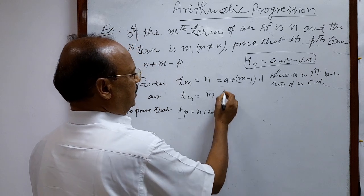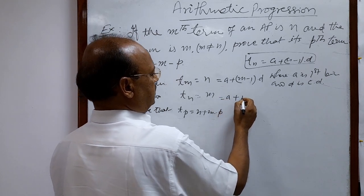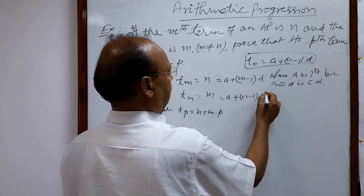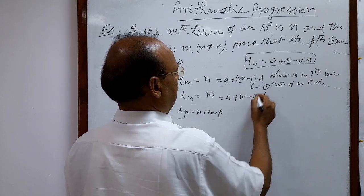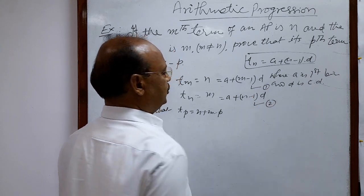Similarly, Tn is a plus (n minus 1) times d. Suppose this is relation 1 and this is relation 2.